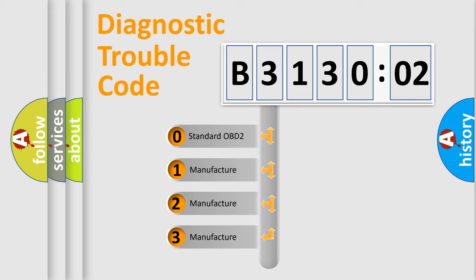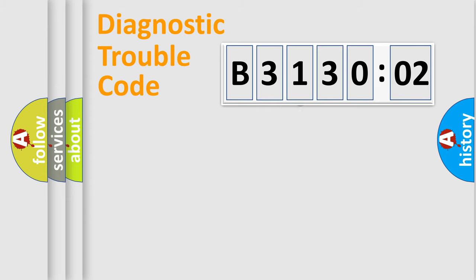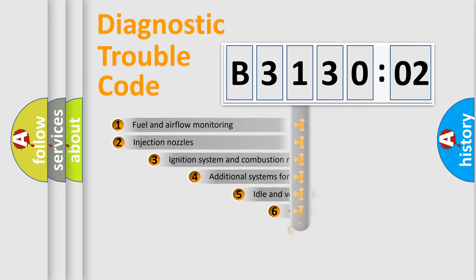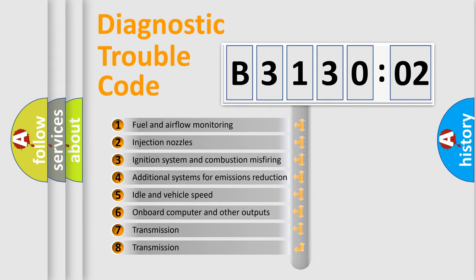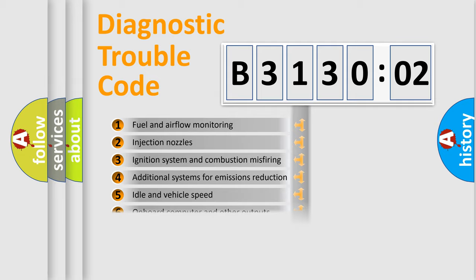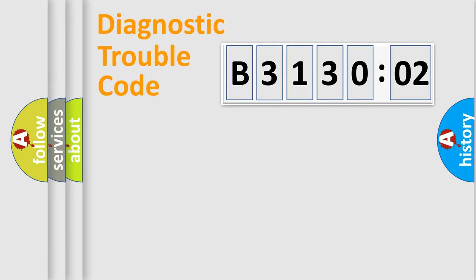If the second character is expressed as zero, it is a standardized error. In the case of numbers 1, 2, 3, it is a more prestigious expression of the car-specific error. The third character specifies a subset of errors. The distribution shown is valid only for the standardized DTC code. Only the last two characters define the specific fault of the group.